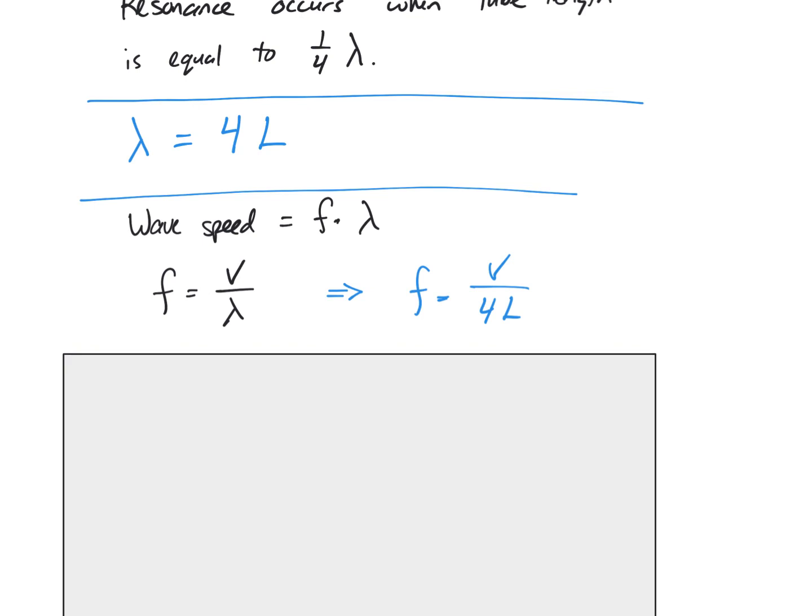I can substitute and solve now for frequency. So the frequency in hertz is equal to the wave speed in meters per second divided by the wavelength in meters. Another way of writing that is to take frequency is equal to the wave speed divided by 4L. I substituted 4L for wavelength, knowing that that's the relationship when the first resonance happens.